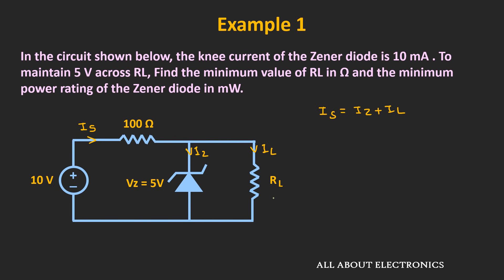As we reduce the value of RL, the load current Il will increase, but the current through the Zener diode will reduce. To operate the Zener diode as a voltage regulator, the minimum current through it must be at least 10 mA. So, the maximum load current must be such that the Zener diode current stays at least equal to the knee current, giving us the minimum value of the load resistor.